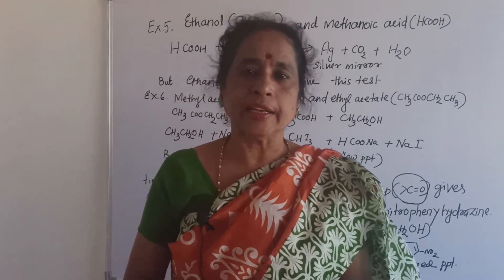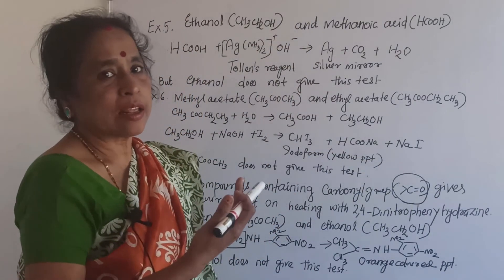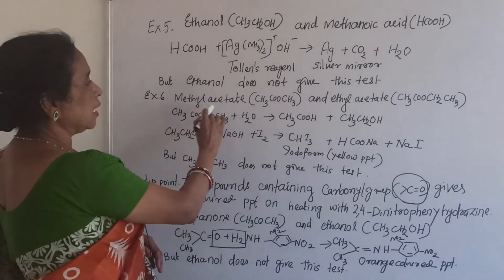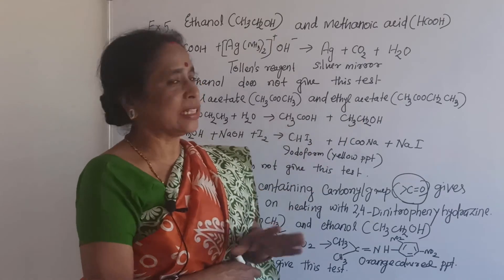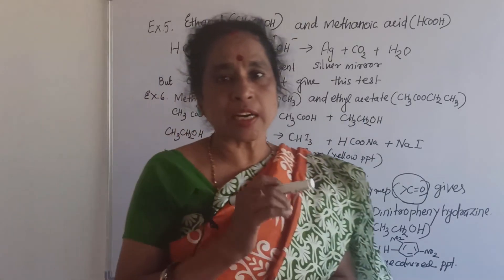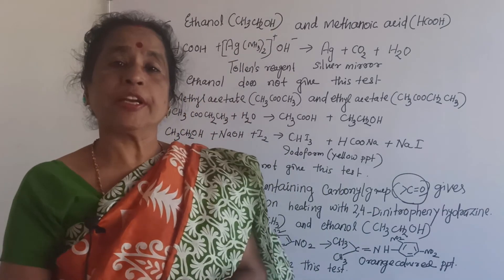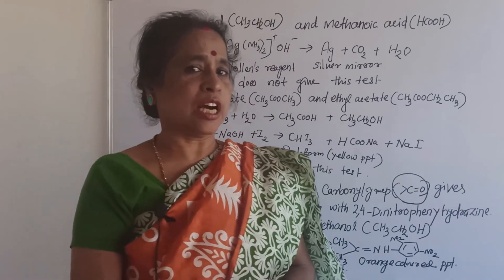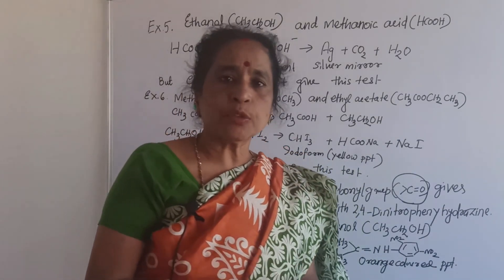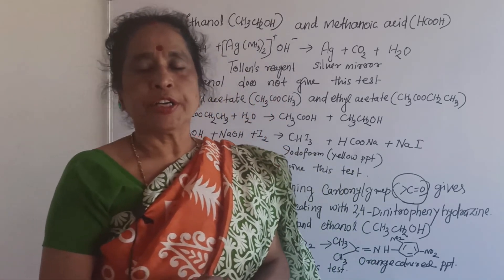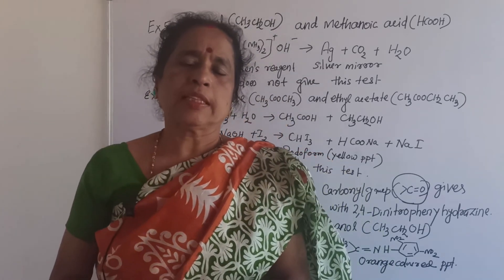Ethanol does not contain any carbonyl group — it contains a hydroxyl (OH) group — so ethanol does not give the 2,4-DNPH test. To summarize: propanone contains the carbonyl group and gives an orange precipitate with 2,4-DNPH, whereas ethanol does not contain a carbonyl group and does not give this test. The 2,4-DNPH test confirms whether a carbonyl group is present in the compound.